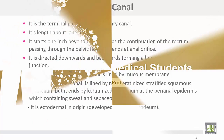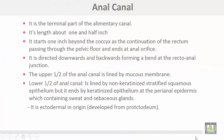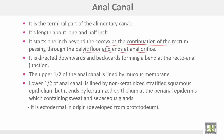Anal canal - it is the terminal part of the alimentary canal, has its length about one and a half inch. It starts one inch beyond the coccyx, has continuation of the rectum, and passing through the pelvic floor and ends at the anal orifice. It is directed downwards and backwards, forming a bend at the recto-anal junction.